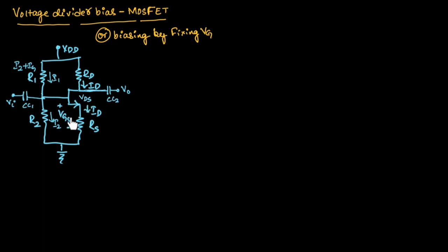Here Vgs will be the input voltage. We know the drain current can be given as K into (Vgs minus Vth) whole square, where K is a constant. The value of K is nothing but (1/2) × KN × (W/L).